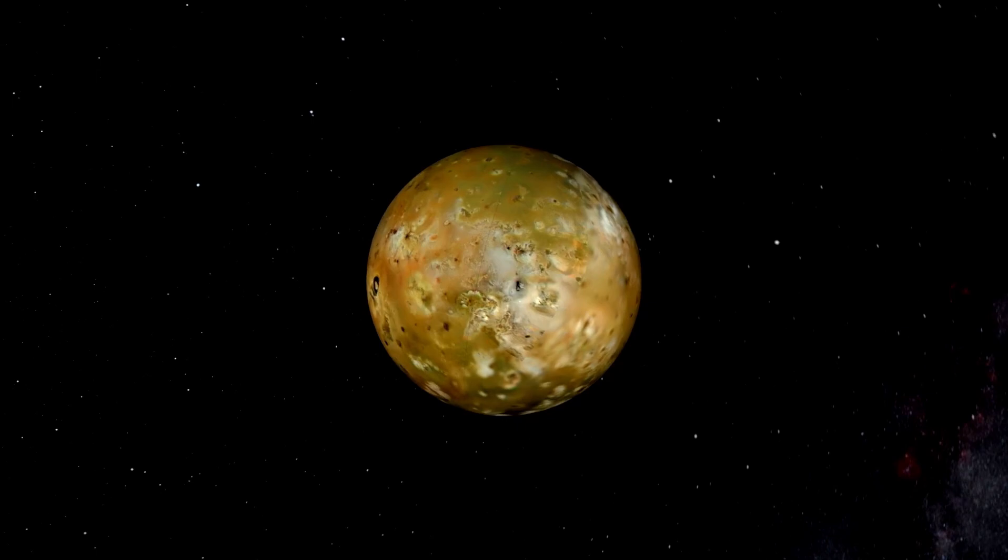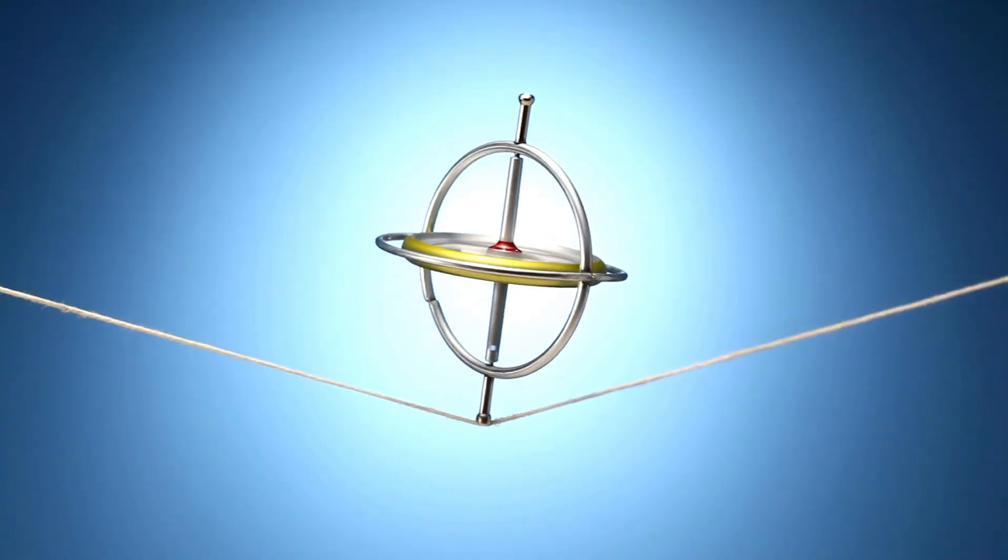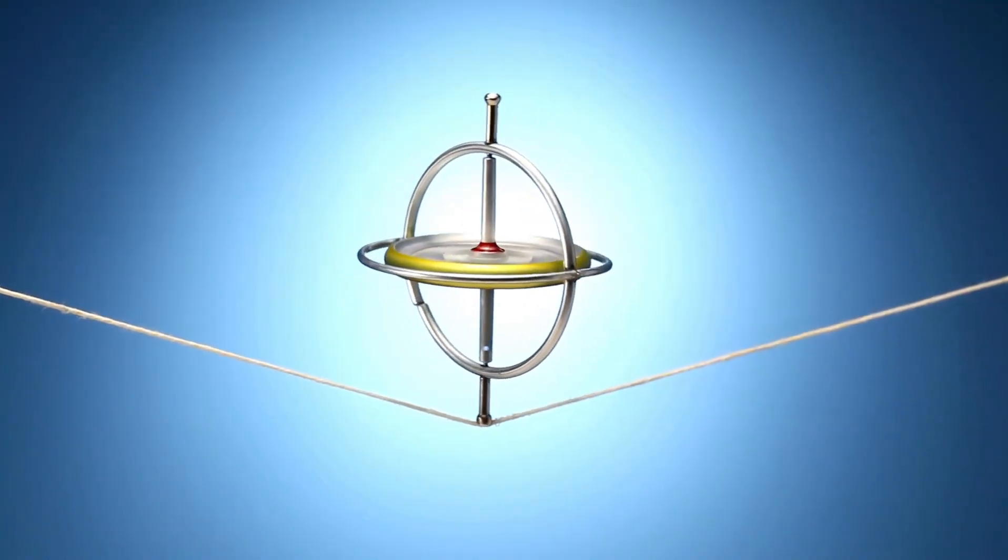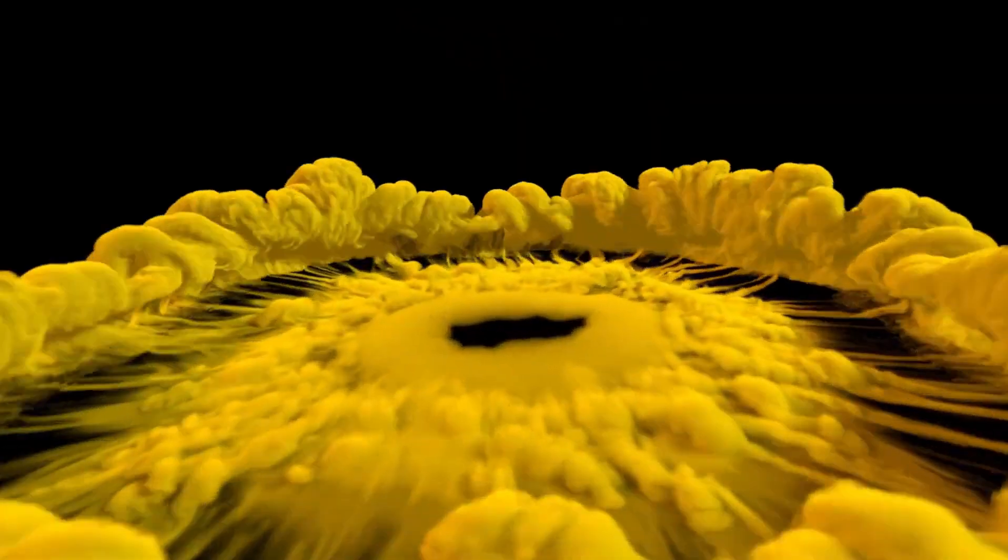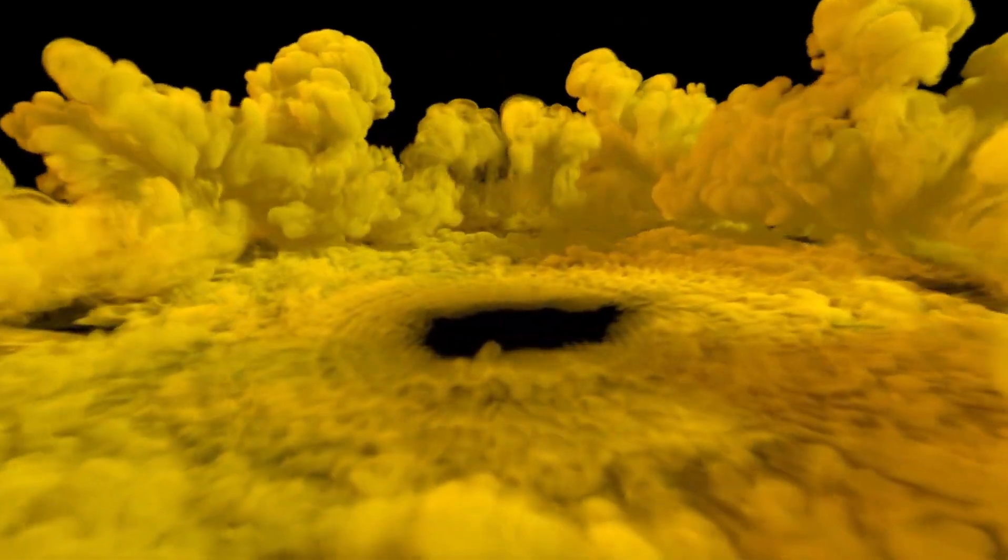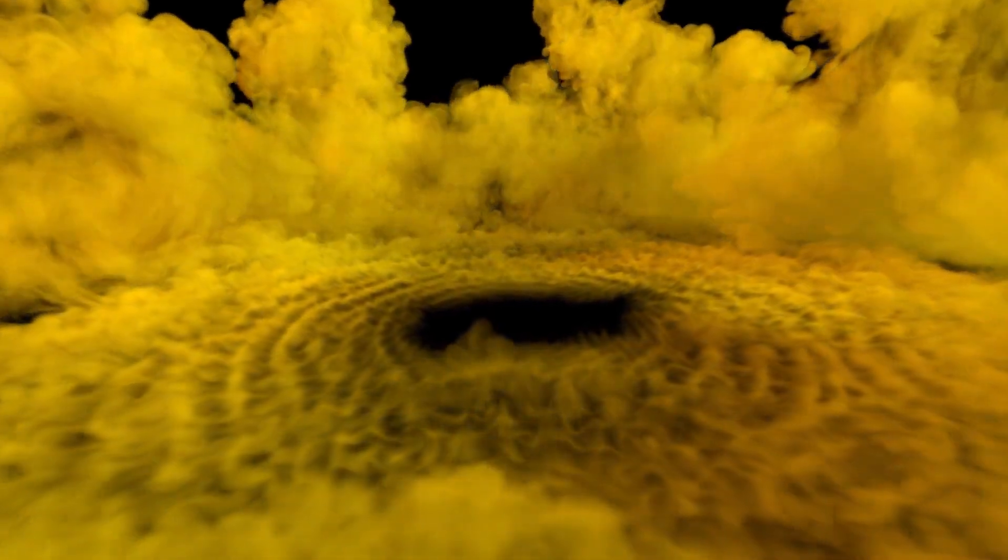But what happened when the Voyager spacecraft crossed the boundary of this solar system bubble? Could we truly be living inside a massive space bubble, and how does this discovery reshape our understanding of the solar system?